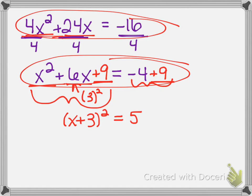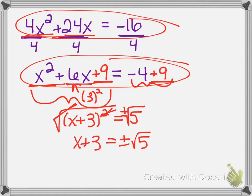The next step is to square root both sides, plus or minus. We have x plus 3 on the left and plus or minus the square root of 5 on the right. The last step is to subtract 3, giving x equals negative 3 plus or minus the square root of 5.